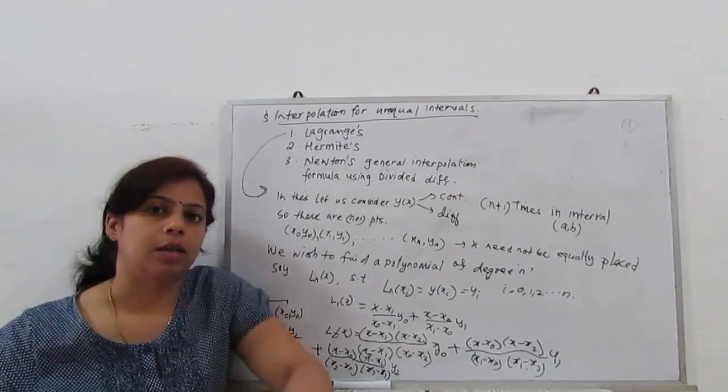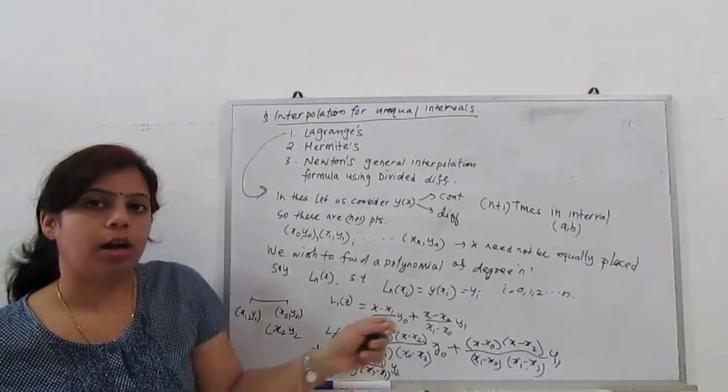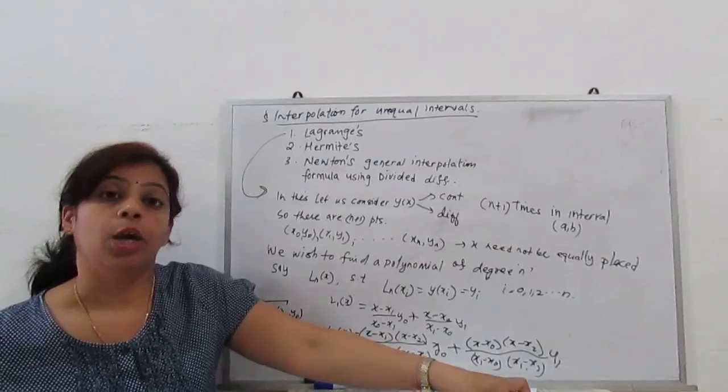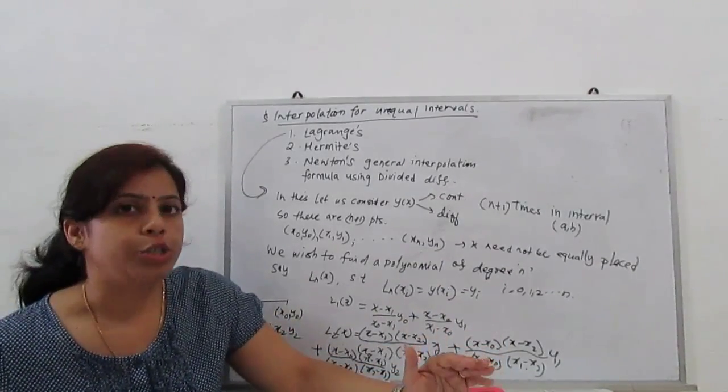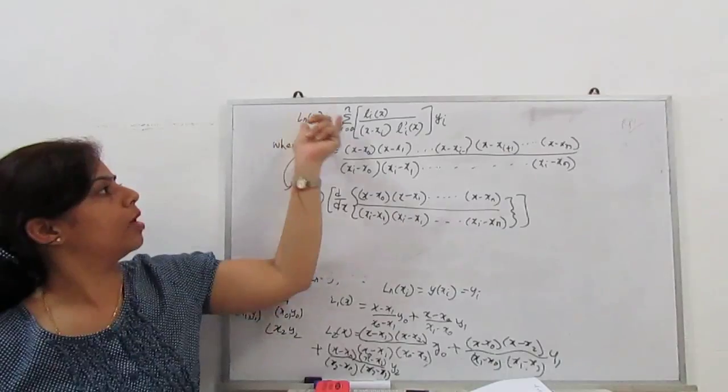This gives with three points second order polynomial, and similarly we can use three, four, five points.